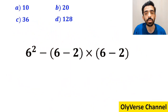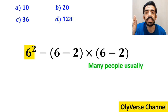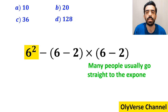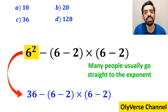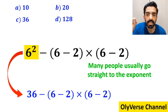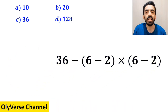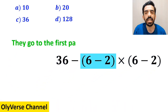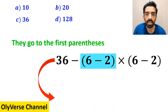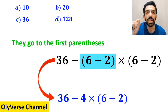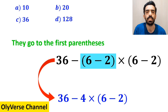For the first step, many people usually go straight to the exponent and rewrite the whole expression as 36 minus (6 minus 2), then multiplied by (6 minus 2). Then they go to the first parenthesis and write 36 minus 4, multiplied by (6 minus 2).